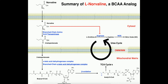That's the catabolic pathway for norvaline. But norvaline's function — at least the reason you would generally take this pre-exercise or pre-resistance training — is because norvaline can actually increase the amount of nitric oxide that the body has available. Let's talk about why that is.